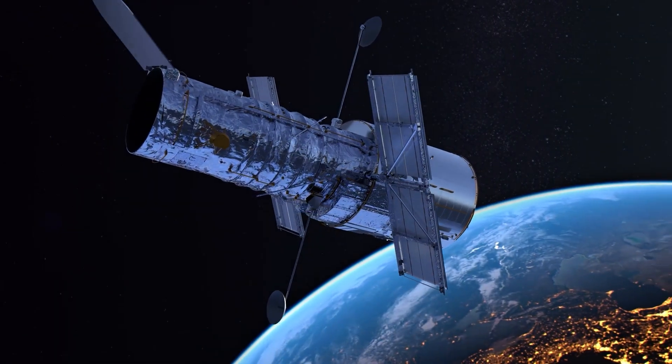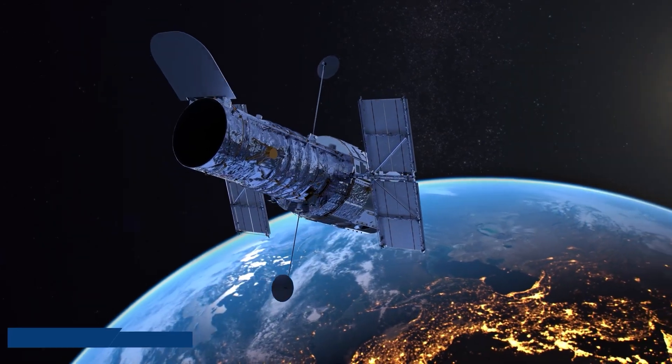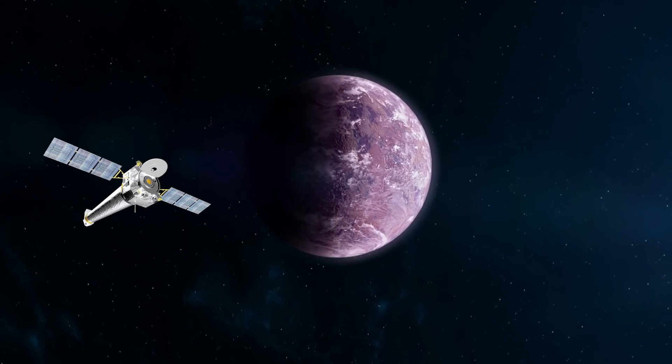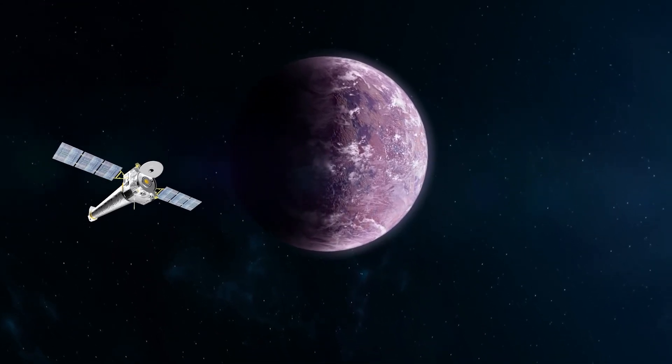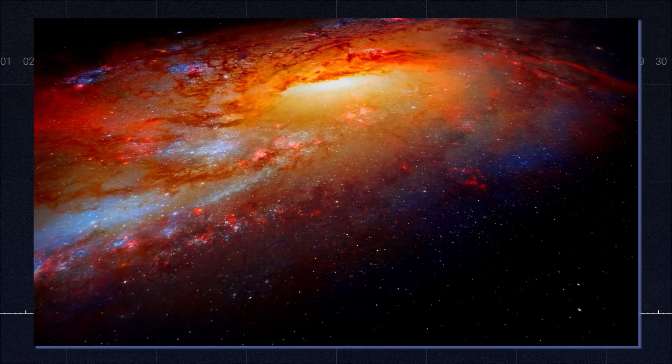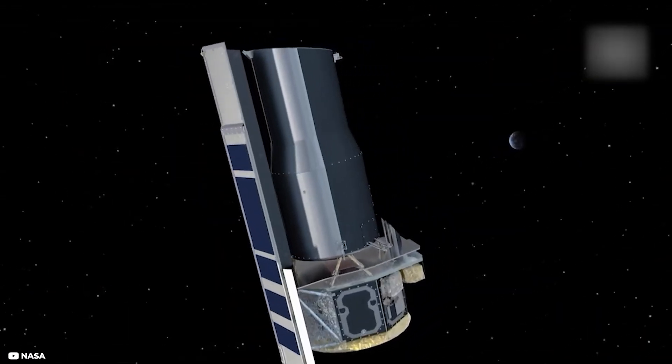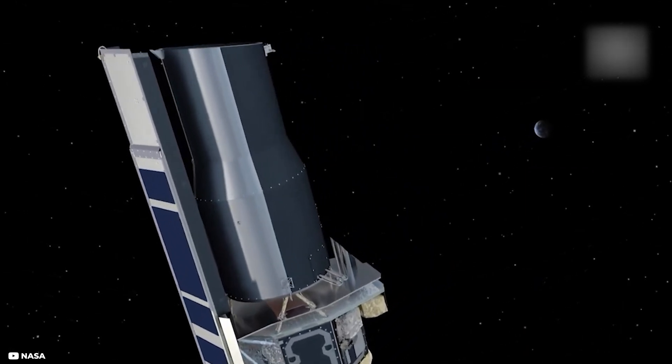Hubble, one of the four major observatories, determined that the universe is 13.8 billion years old. The Chandra Observatory gave proof of the existence of dark matter. Compton provided us with a full image of the Milky Way's cosmic core. Spitzer also enabled the discovery of some of the universe's earlier stars.